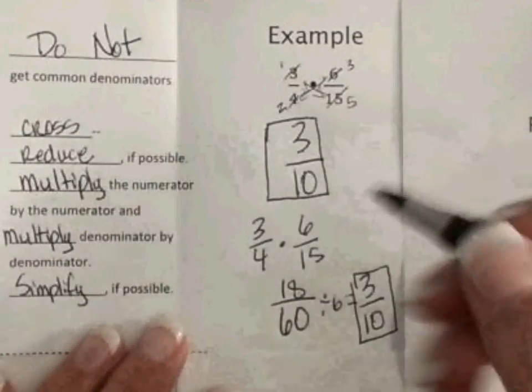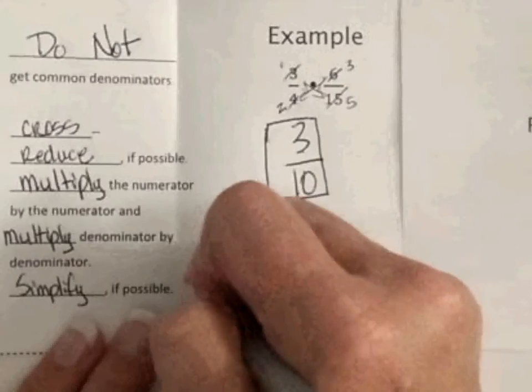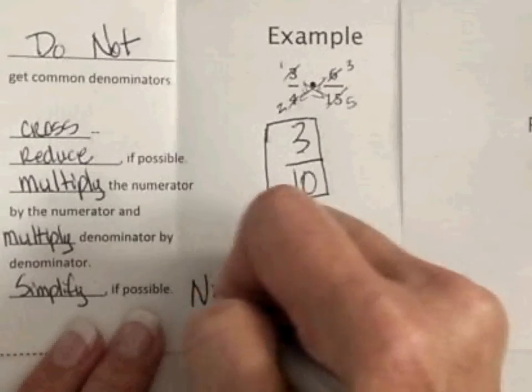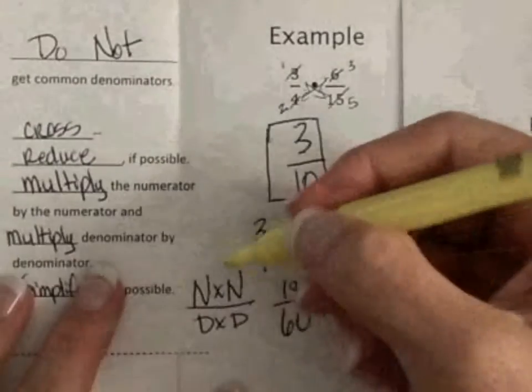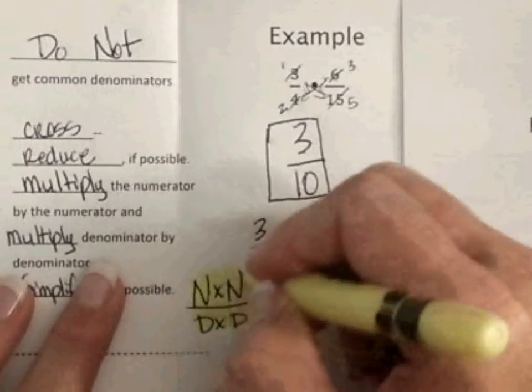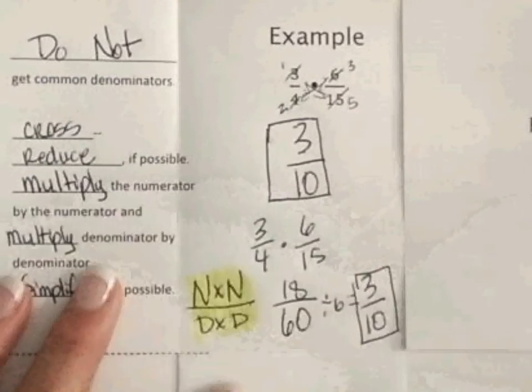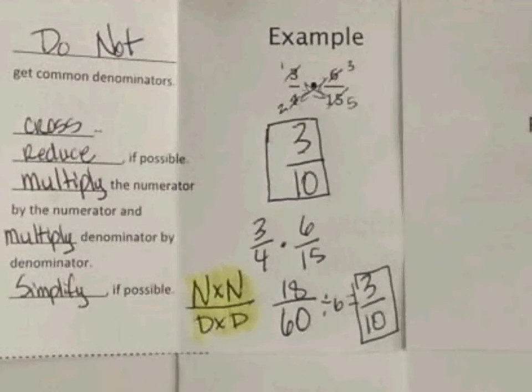So, multiplying. I like to do numerator times numerator over denominator times denominator. Just as a little cheat. You know that's what you're doing. You're cross-multiplying across. And remember, you do not need to get common denominators.